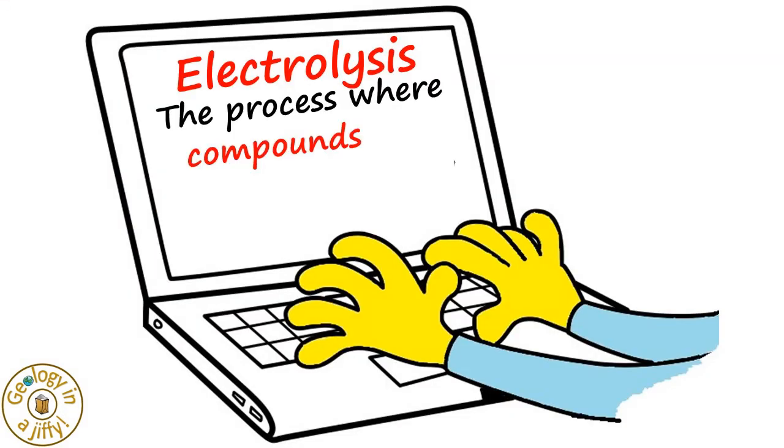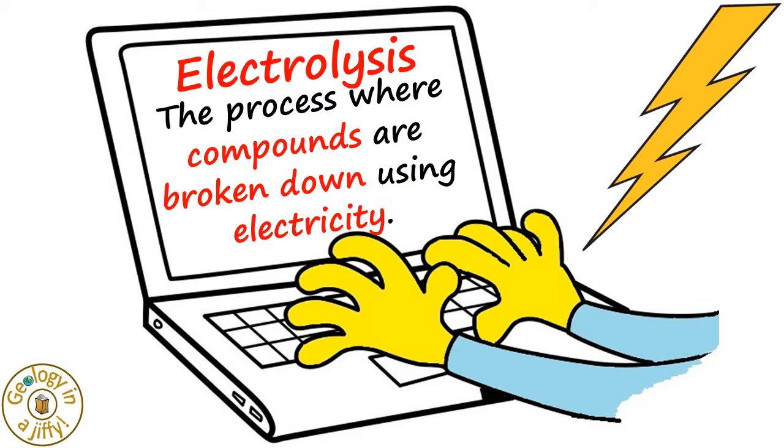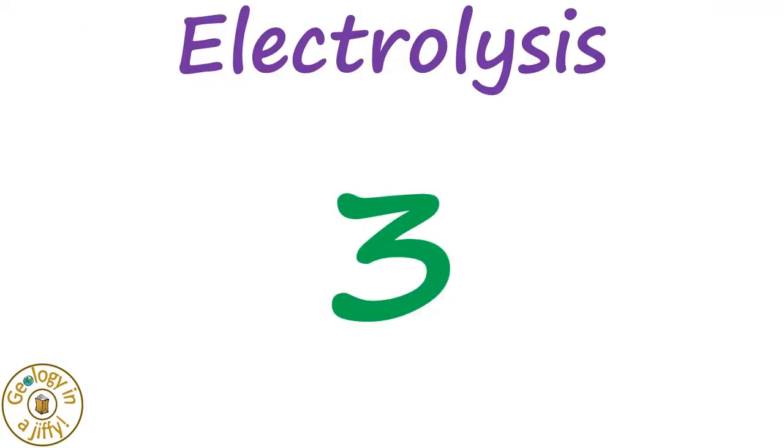Electrolysis is the process where compounds are broken down using electricity. Electrolysis has three main uses.